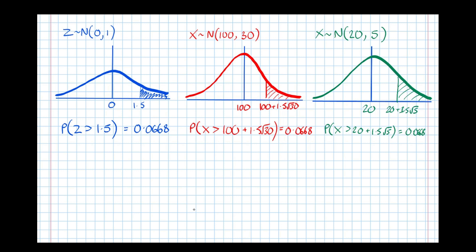So that's the thing that links these three distributions — the z-values, the number of standard deviations from the mean. You'll notice this is the same for any normal distribution. To calculate the z-value for any normal distribution, we take our boundary value x, subtract the mean (that's the distance from the mean, x minus mu), then divide by the standard deviation to see how many standard deviations from the mean we are. That's what a z-value is: the number of standard deviations from the mean.